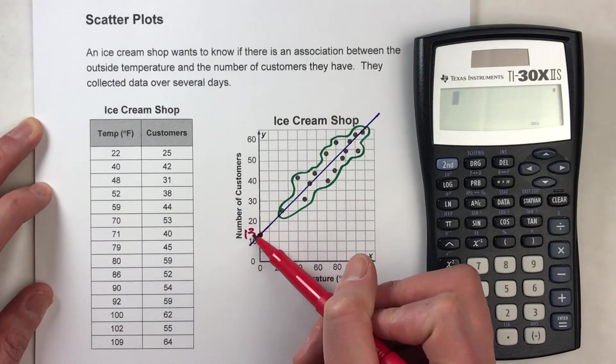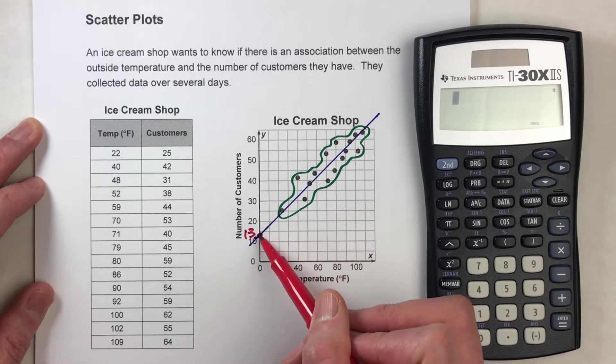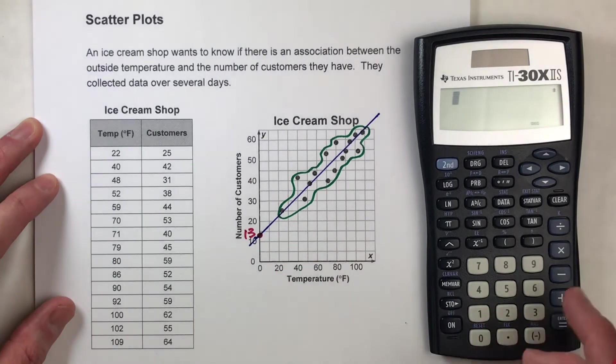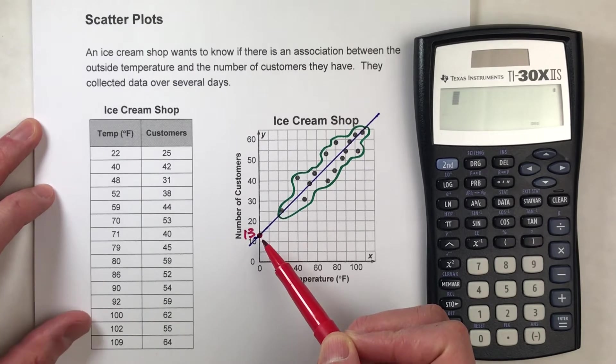Again, we're going to have to estimate because we don't have the exact value there. We don't know what it exactly is. So I found my y-intercept as 13. Now to find the slope, I need two points and to find the rise and the run.